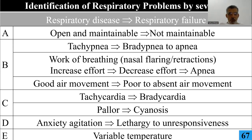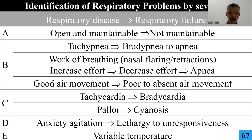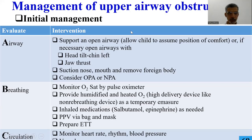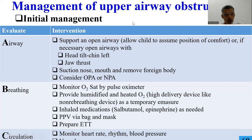We've reached the respiratory diseases section, covering how we distinguish respiratory failure from respiratory disease status based on the area we're assessing — whether it's airway, breathing, circulation, disability, or exposure — and how we manage airway problems, whether upper, lower, tissue disease, or controlling breathing.